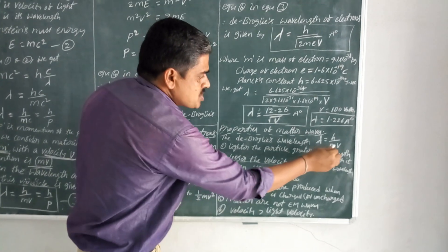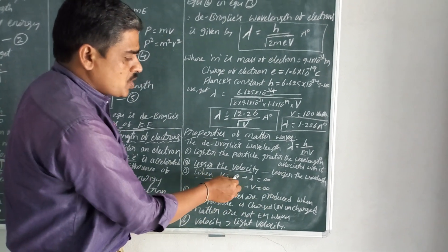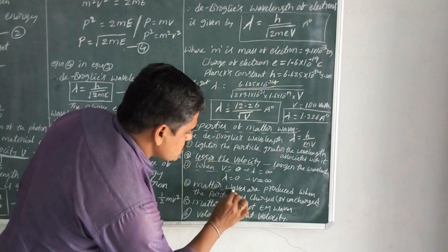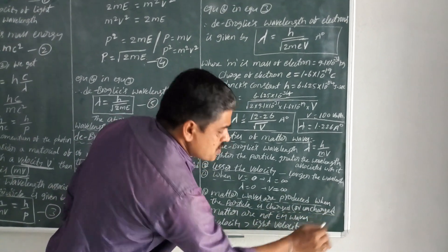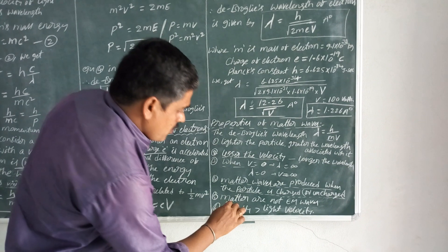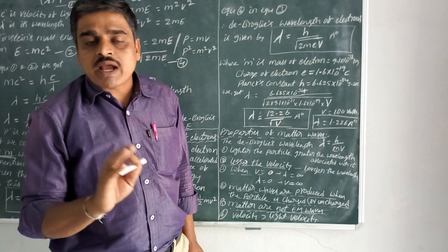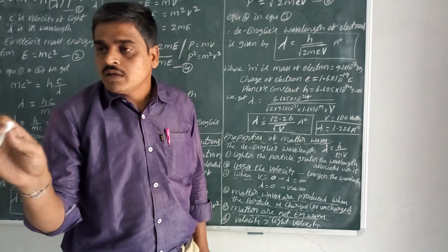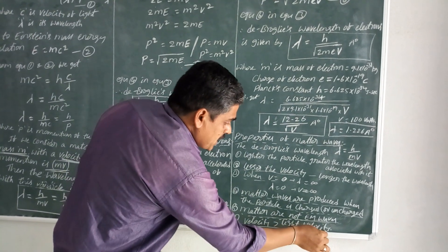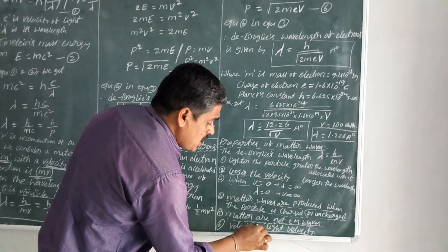When velocity v is equal to zero, the wavelength is infinity. When lambda is equal to zero, velocity is equal to infinity. Matter waves are produced whether the particle is charged or uncharged. Matter waves are not electromagnetic waves — these are a new kind of waves. The velocity of matter wave is greater than the velocity of light.